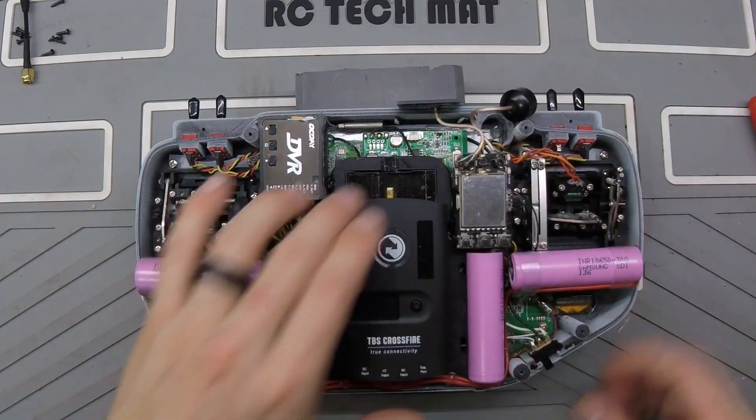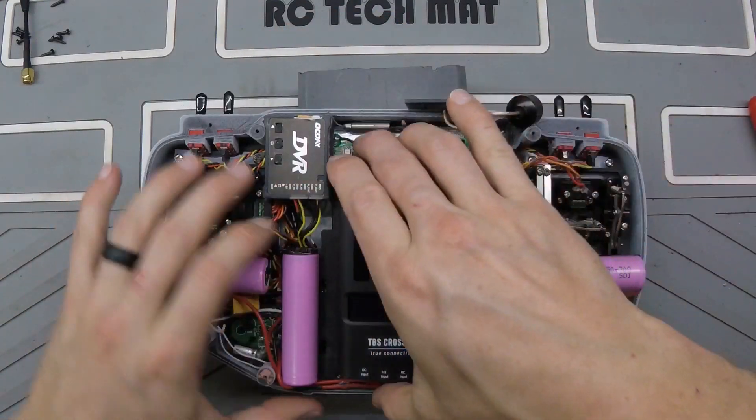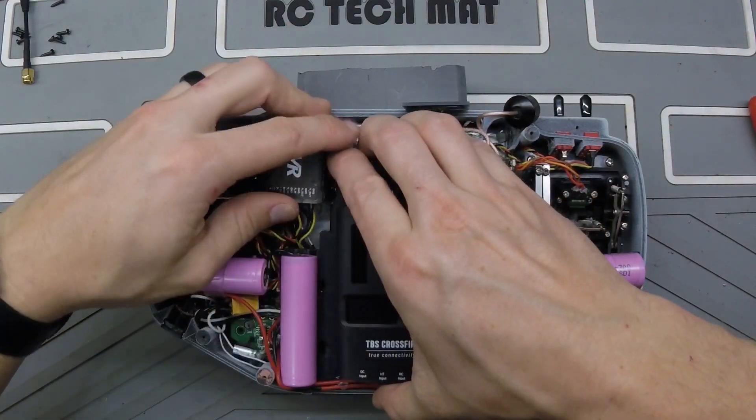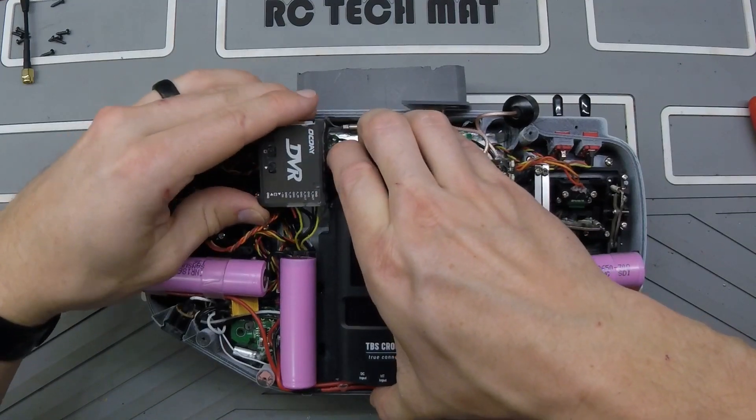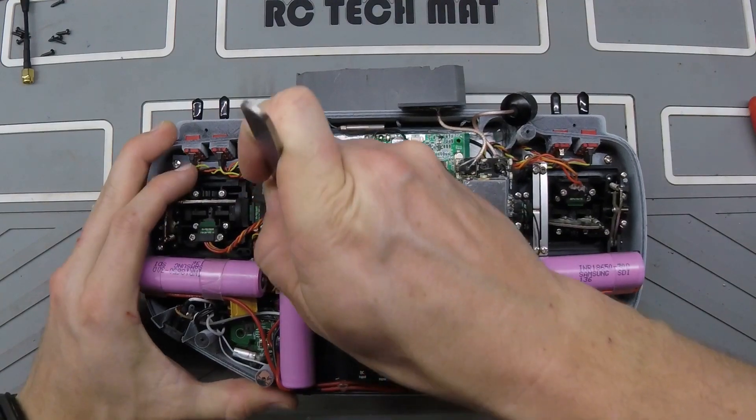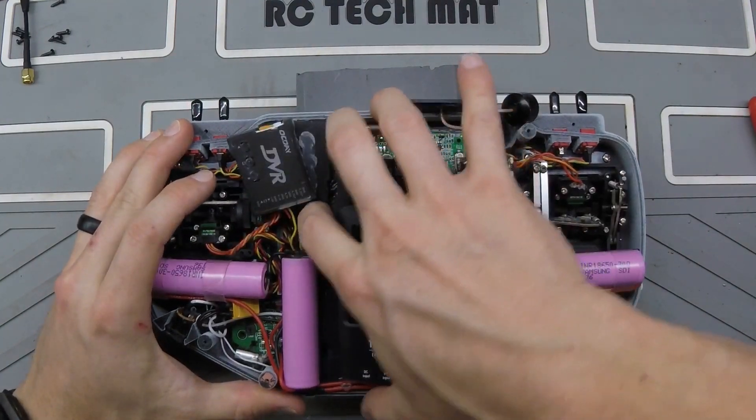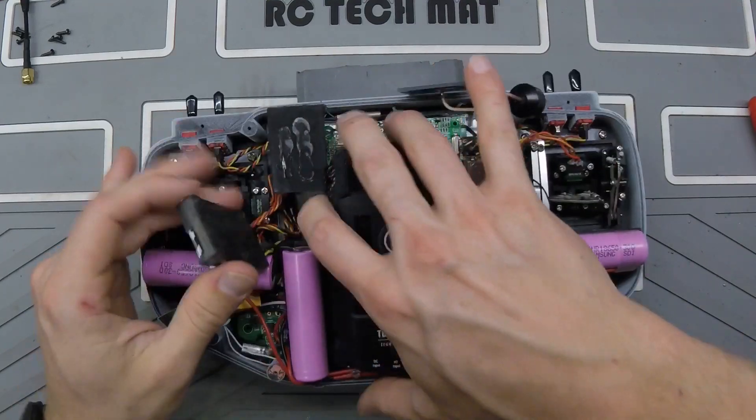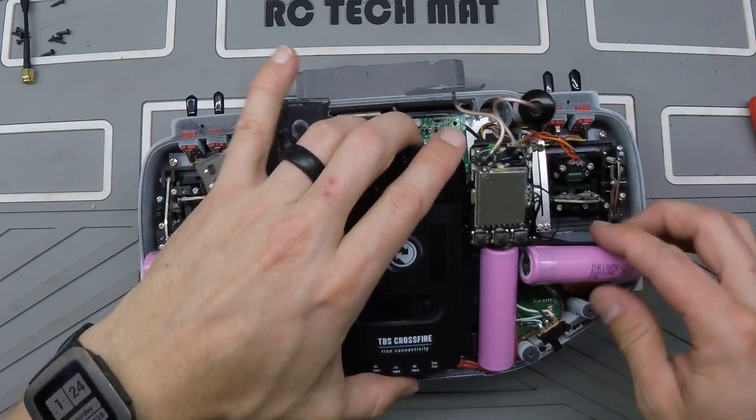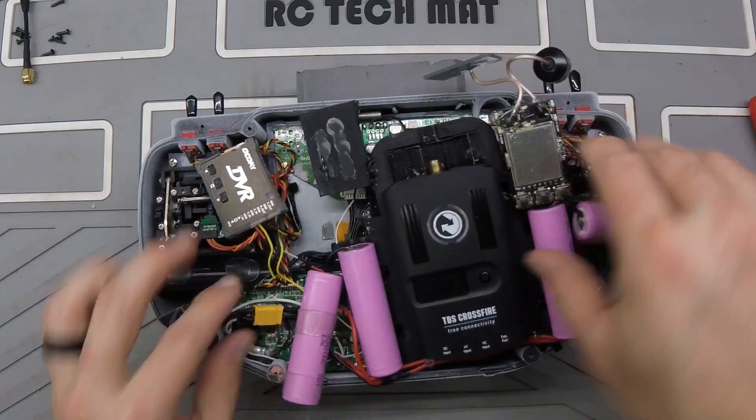Now we're going to remove the crossfire module, the video receiver, the antennas, and the batteries which are all mounted on one shelf. We'll pop that out. There's two pieces of double-sided tape on the top left corner by the crossfire and on the top right corner underneath the diversity receiver. Once those are removed we can pull it up and out a little bit and then we can get to the main power lead, the XT30.